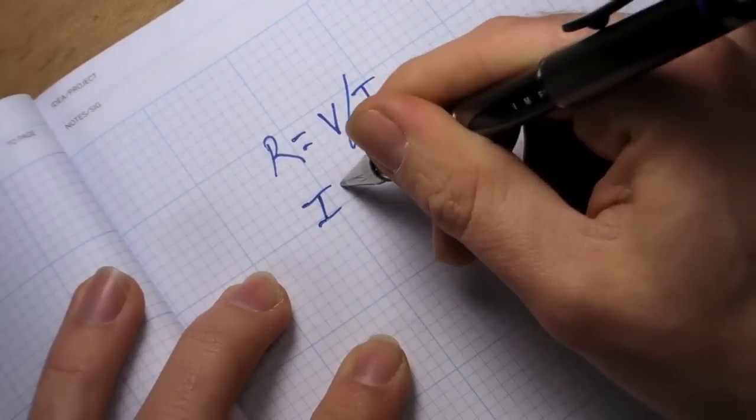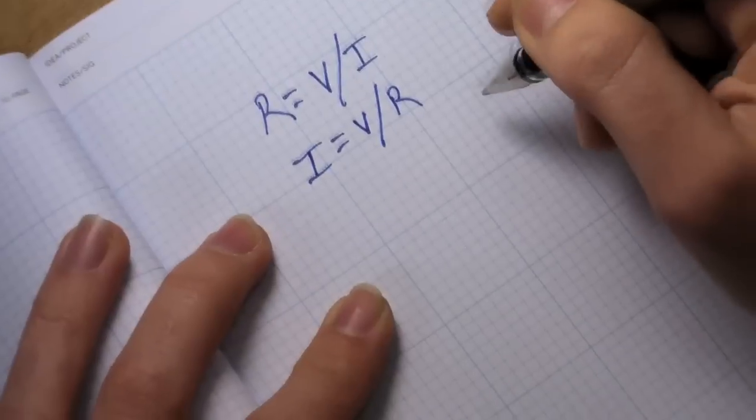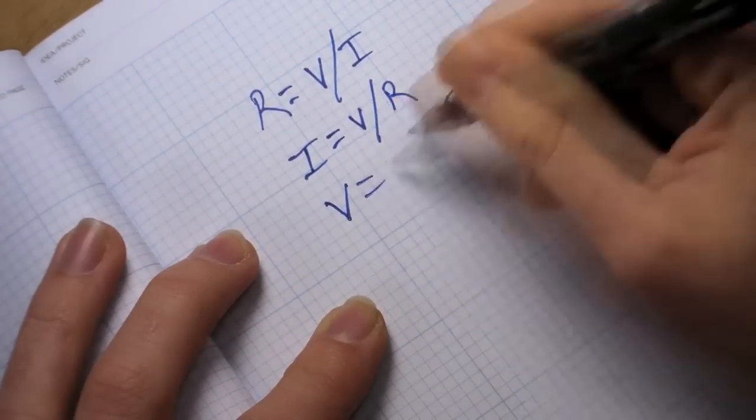As long as we know two of the three values, we can rearrange this equation to find the third value. Thanks to algebra.